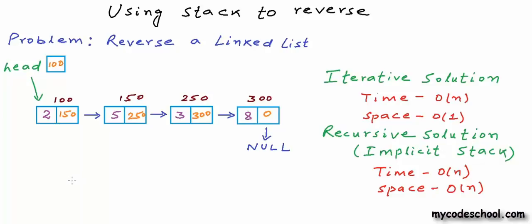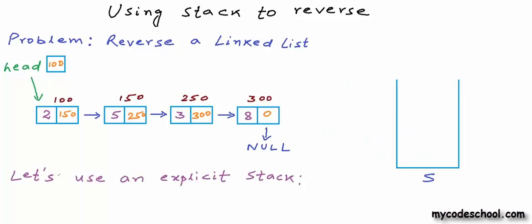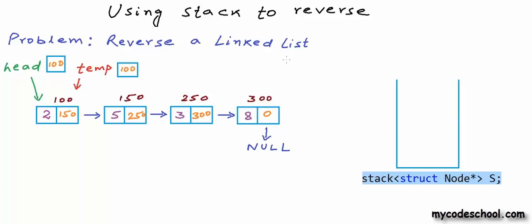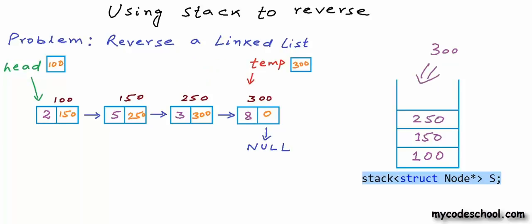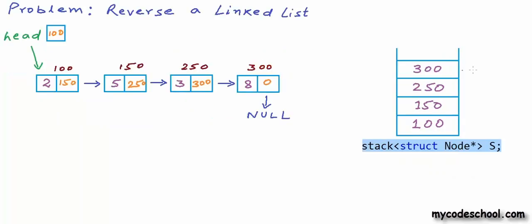Now let's see how we can use an explicit stack to solve this problem. I have drawn logical representation of stack here. Right now the stack is empty. In a program, this will be a stack of type pointer to node. What I'm going to do is traverse this linked list using a temporary pointer to node. The temporary variable will initially point to head. When we go to a particular node, we push the address of that node onto the stack. So first 100 goes to stack, then we move to the next node. Now 150 goes in stack, then we go to 250 and then to the last node at 300.